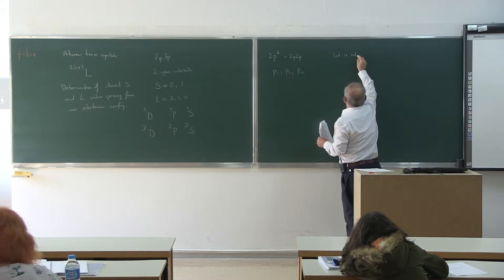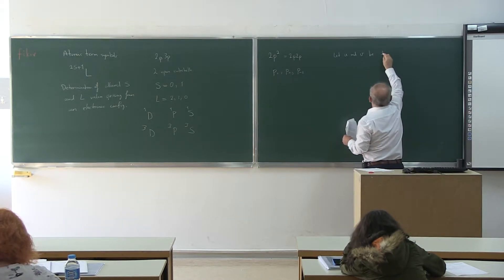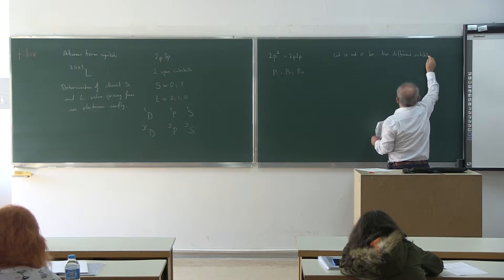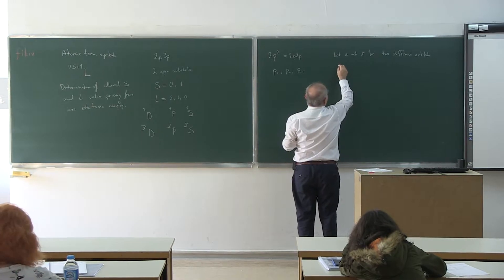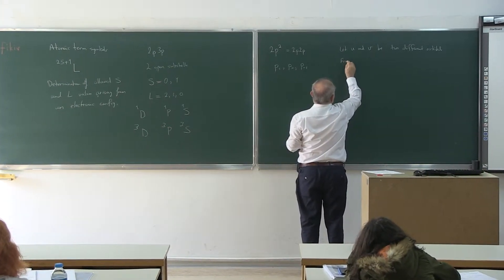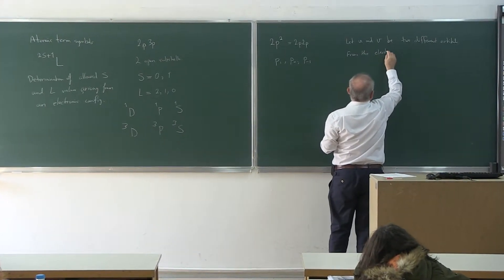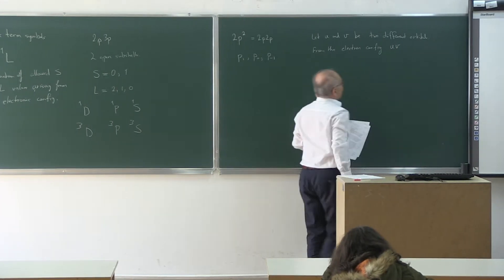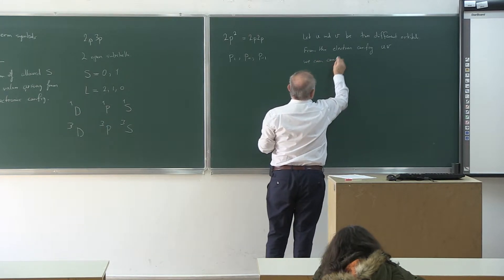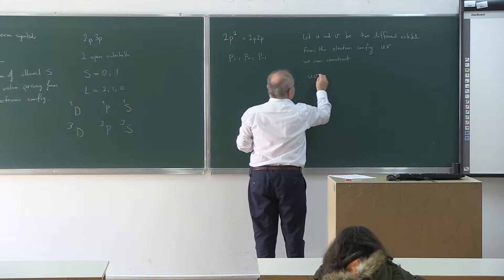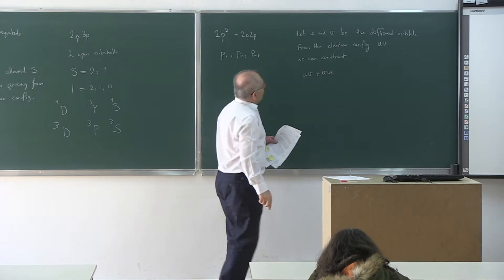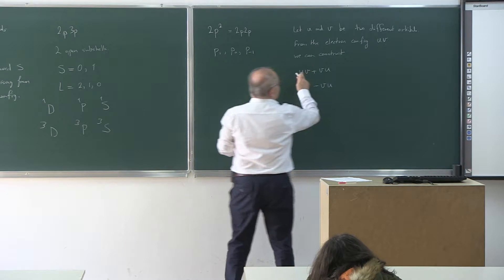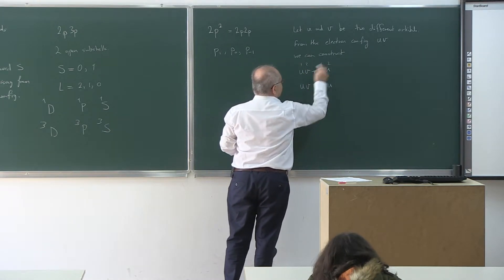Let u and v be two different orbitals. From the configuration with one electron in u and one electron in v, we can construct the space parts: u(1)v(2) plus v(1)u(2), and u(1)v(2) minus v(1)u(2), where electron labels one and two run left to right in the orbitals.